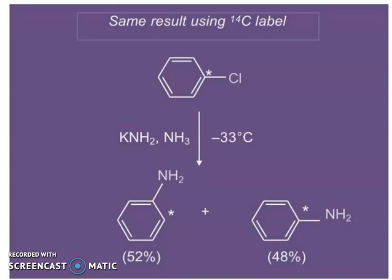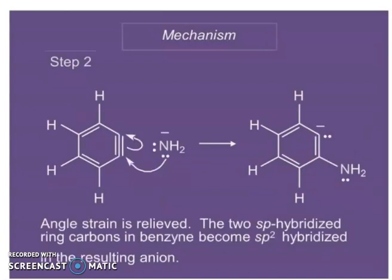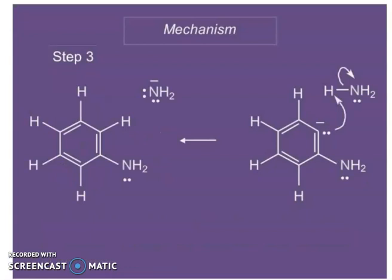The results show two products: one at 52% and another at 48%. These two products indicate the formation of a symmetric intermediate — benzyne. The two sp-hybridized ring carbons in benzyne become sp2-hybridized in the resulting anion, which explains how angle strain is relieved.